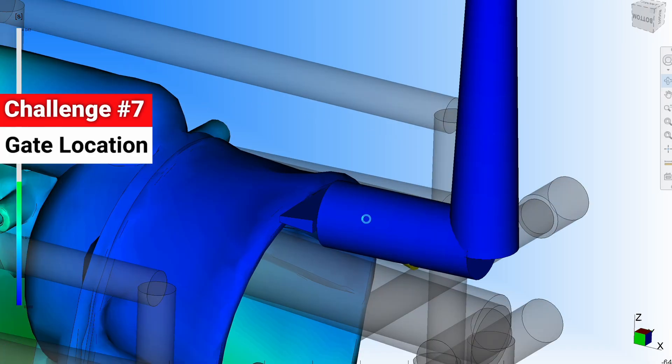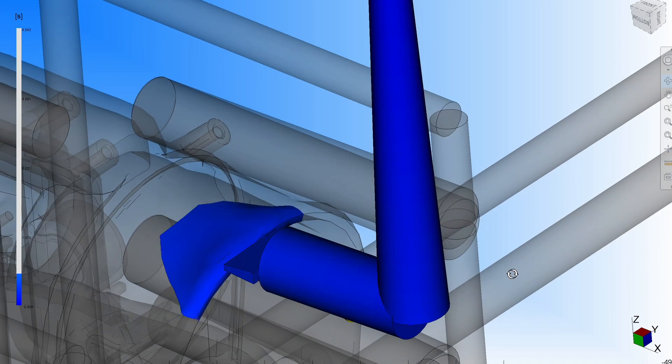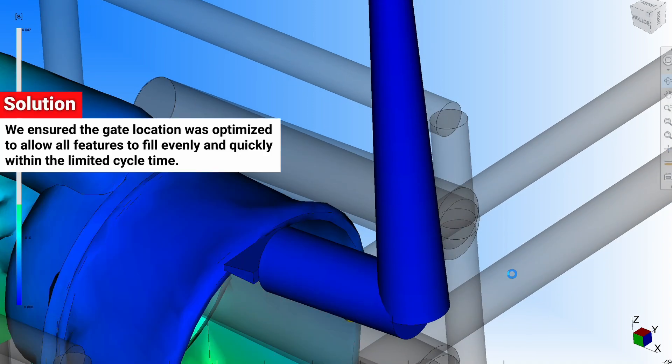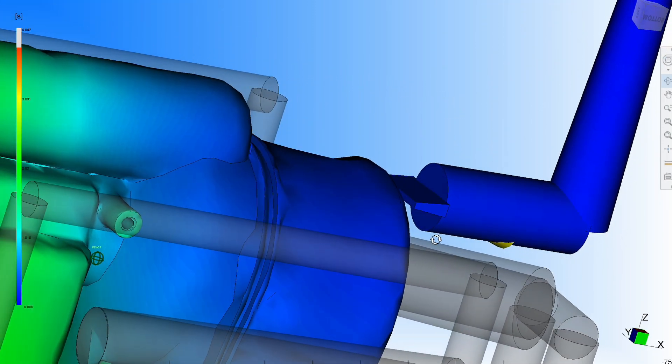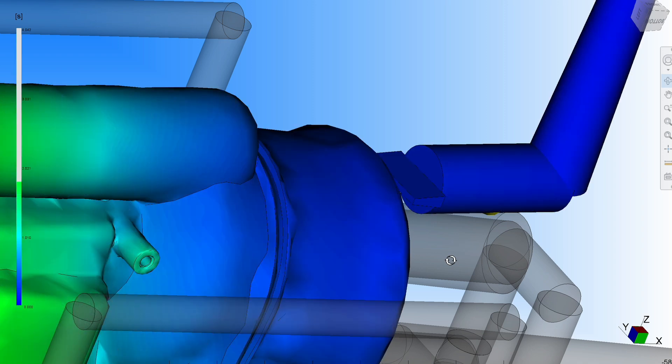Gate placement and type are also important considerations and there are many to choose from. Usually, gates are placed as close as possible to the thickest section of the part. More importantly, the gate location must ensure that all features fill evenly and quickly within the limited cycle time. And that can be very challenging indeed and take a lot of fine-tuning to balance out all of the forces involved.